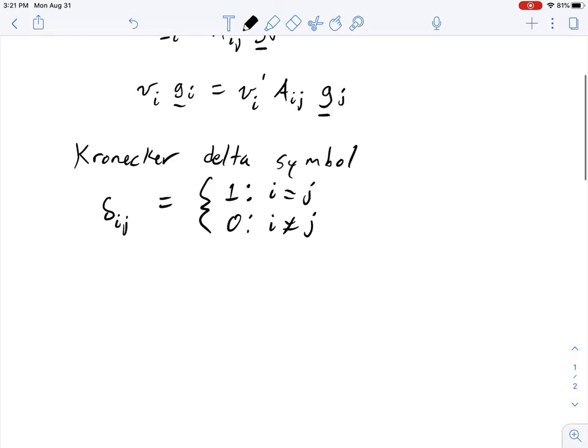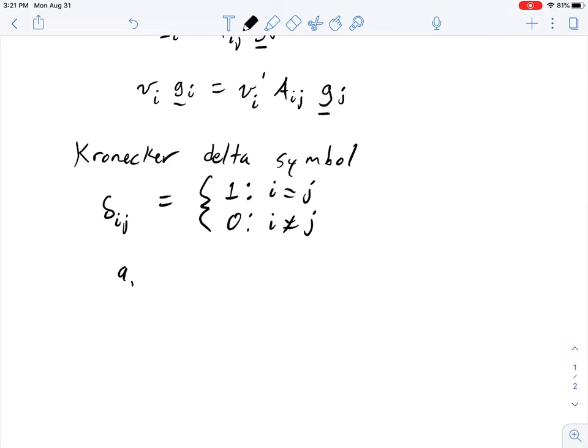So a consequence of that is aj delta ij equals ai. If we have a matrix and multiply it by its inverse, you'll get delta ij in index form. So if we had aij times a inverse jk, then that is equal to delta ik.